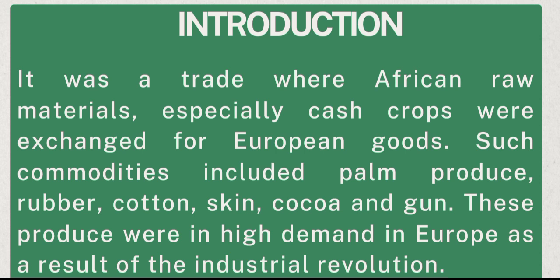Such commodities included palm produce, rubber, cotton, skin, cocoa, and gum. These produce were in high demand in Europe as a result of the Industrial Revolution — cocoa, gum, hide and skin, cotton, rubber, and palm produce.